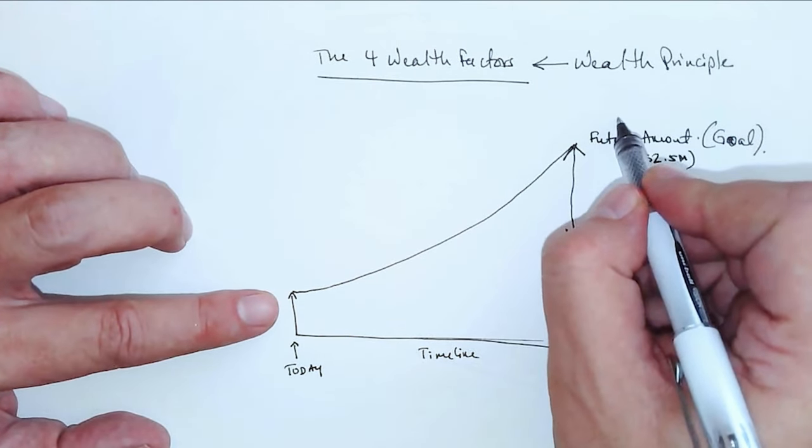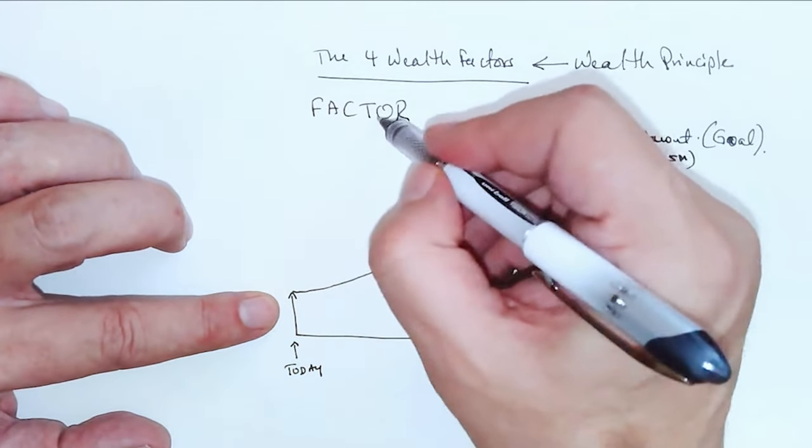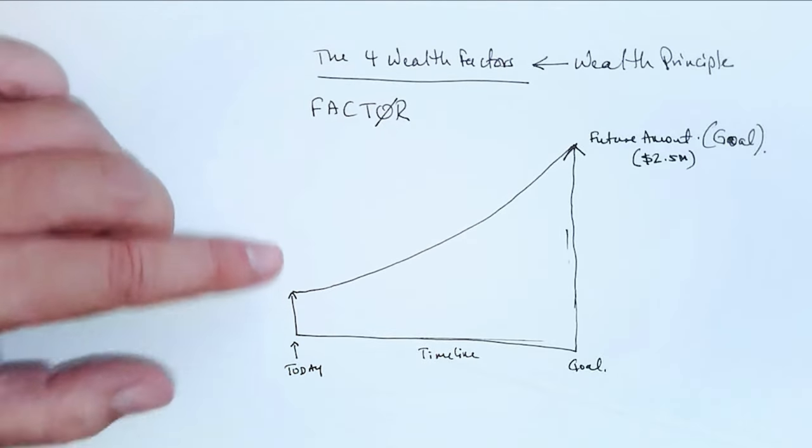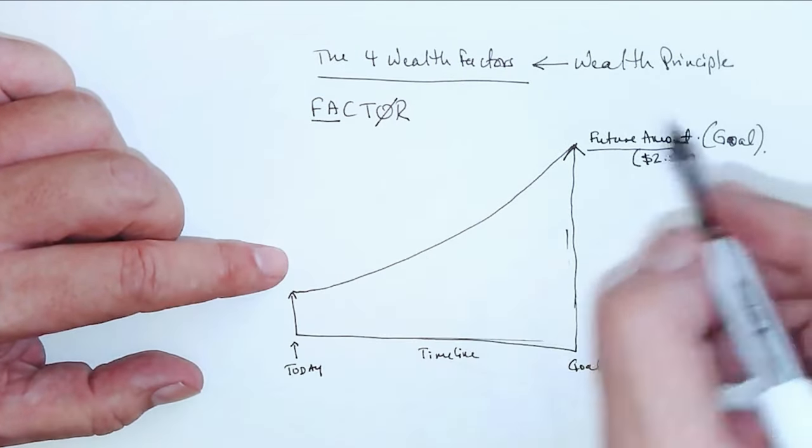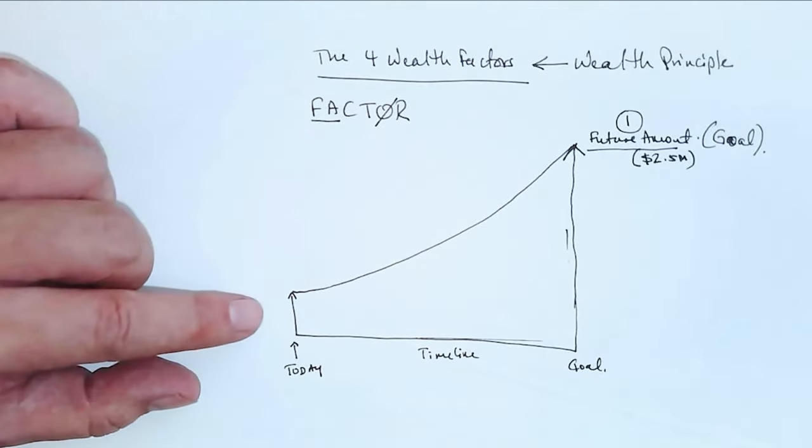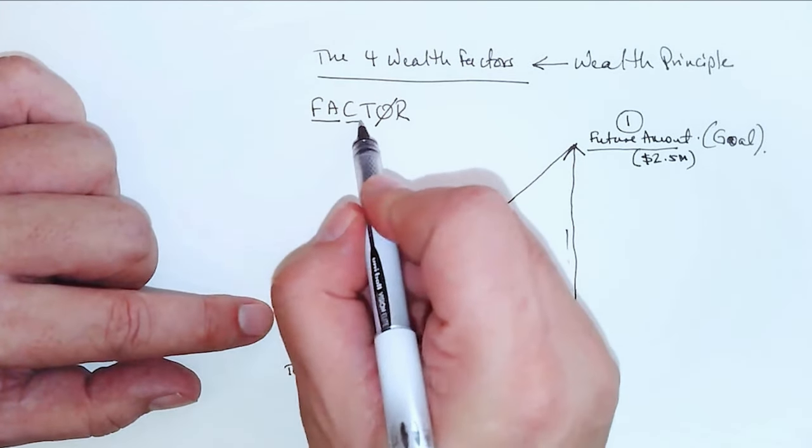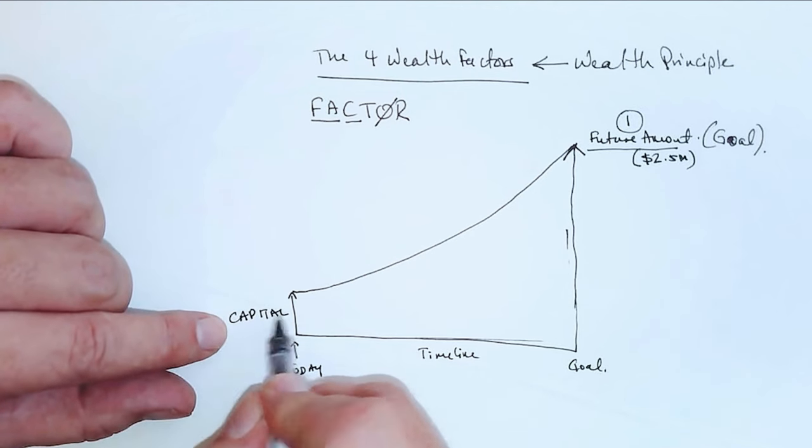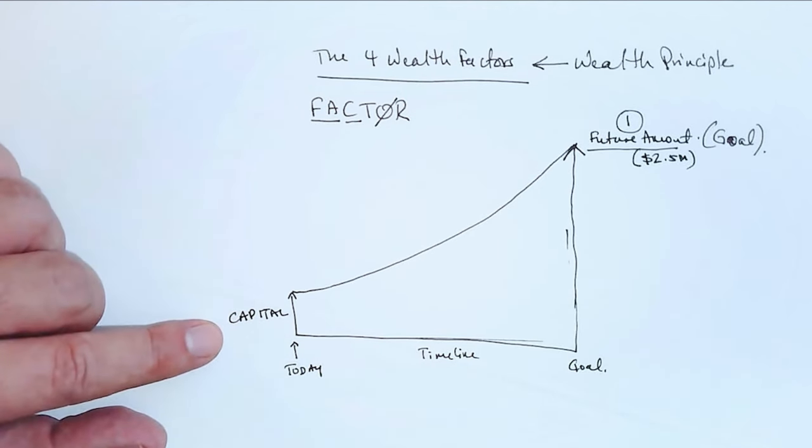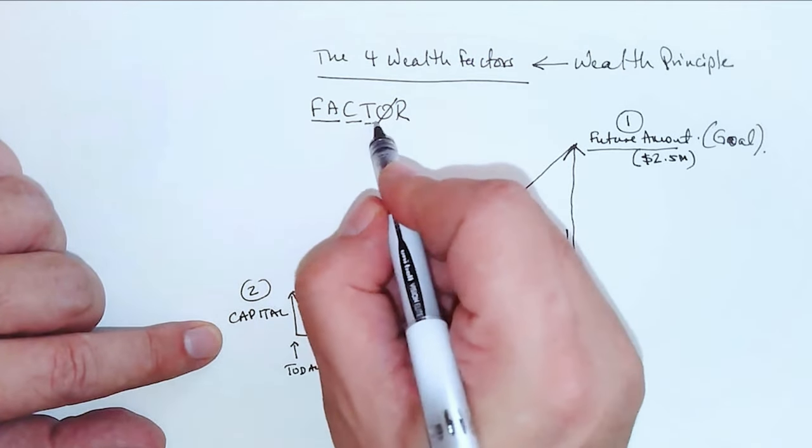Number one, I'm gonna write here 'factor.' You'll see why. And I'm gonna remove the O, you'll see why in a second. Future amount is the first factor. The second one is capital. This is the capital, the money you have. This is your second factor.